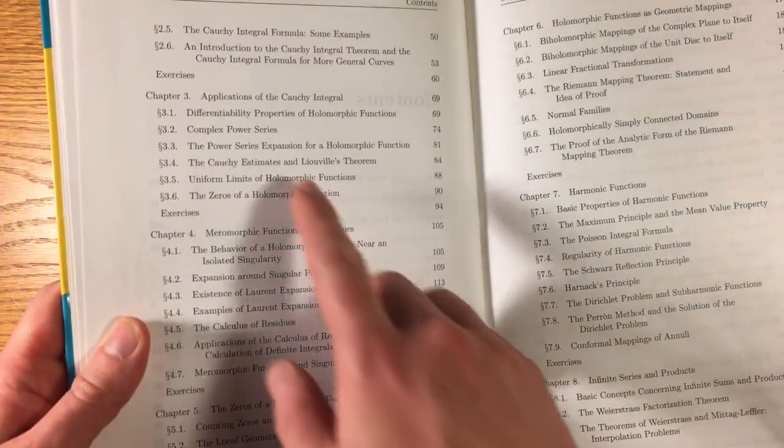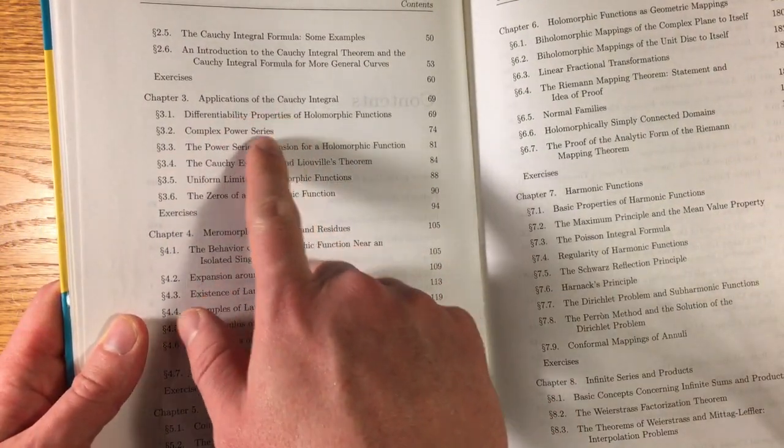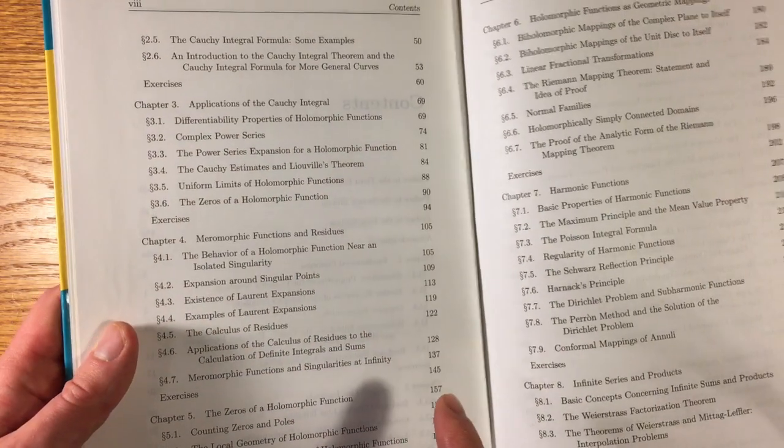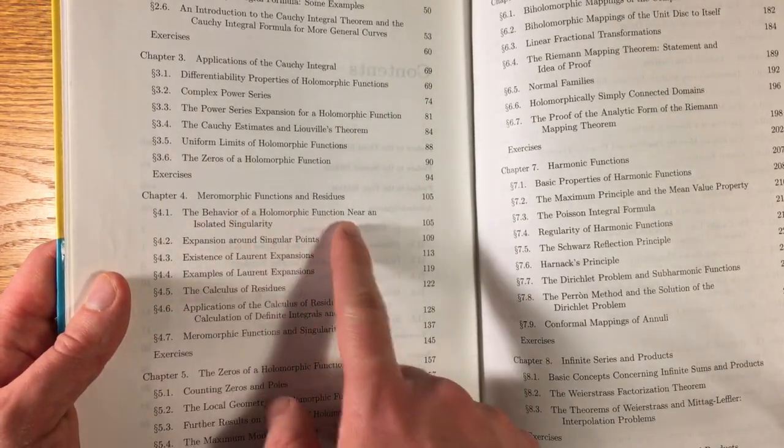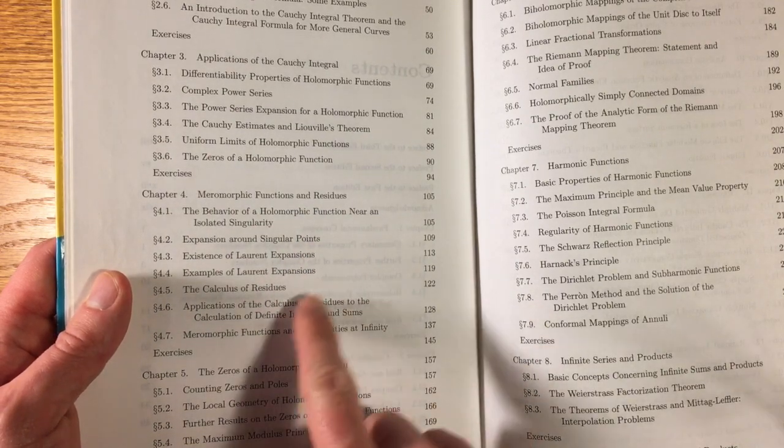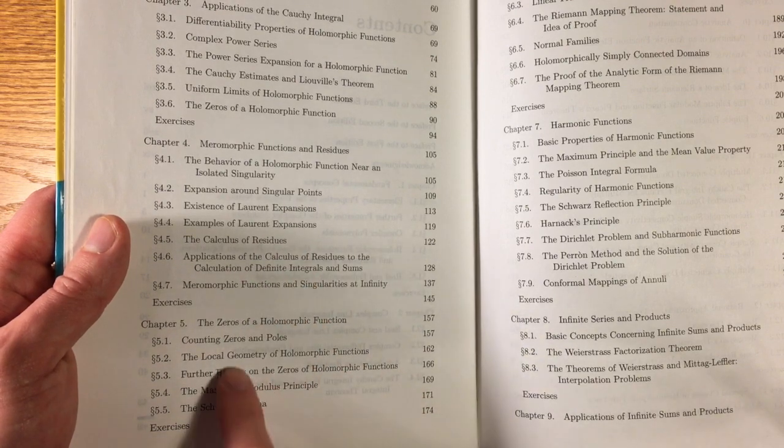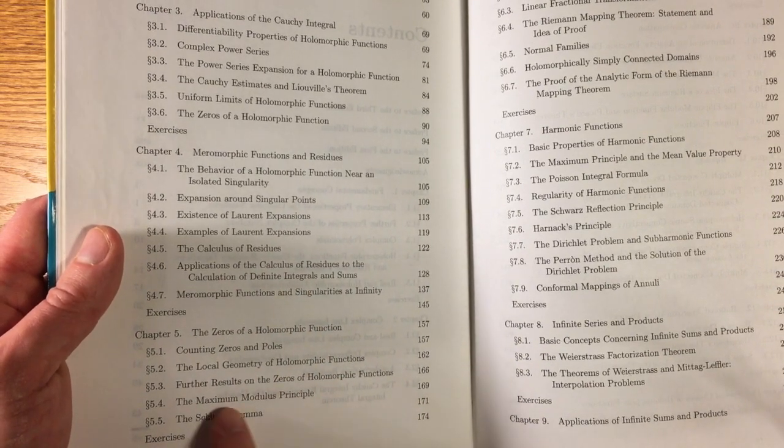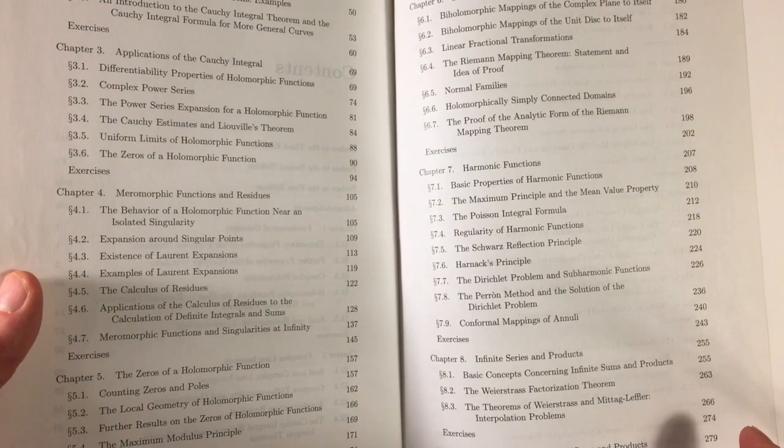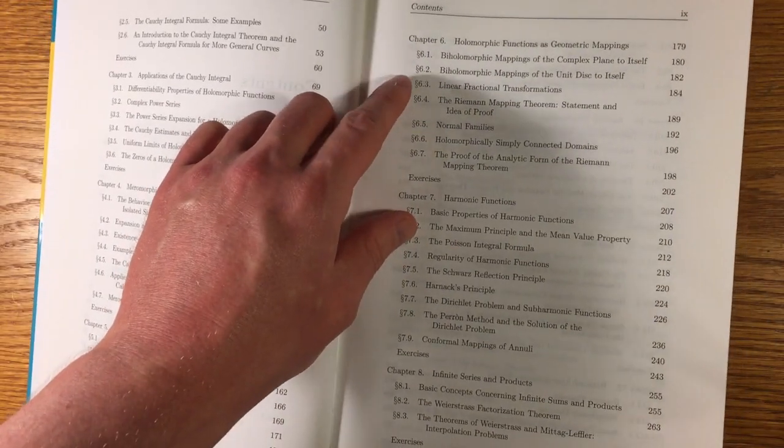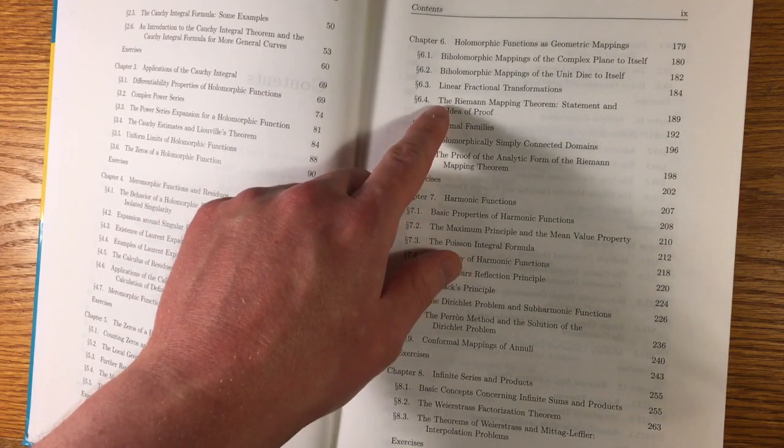The third chapter covers the applications of those formulas to properties of holomorphic functions. Then there's a chapter on meromorphic functions and residues and the residue theorem. Some more consequences theorems involving those about the zeros of a holomorphic function and the maximum modulus principle. And then you have chapter six on conformal mappings, including the Riemann mapping theorem.